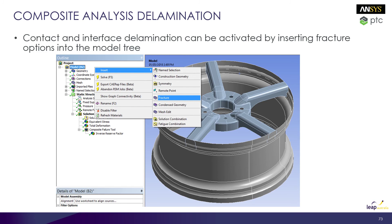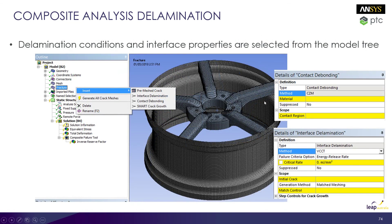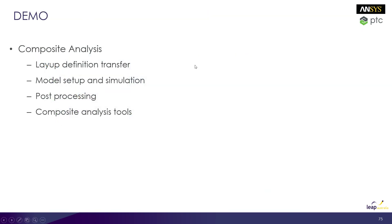To look at delamination, we need to activate that part of the analysis by inserting a fracture system in the model. At that point we can choose whether we're looking at interface delamination or contact debonding, and also the method for capturing delamination energy — either the cohesive zone model or the virtual crack closure model. This is where we apply material properties like separation energies or fracture toughness to contacts or interfaces within our structure. We'll then do a quick demo looking at our composite chassis, transferring the data into a mechanical analysis, setting up the model, and doing post-processing for strength and safety.